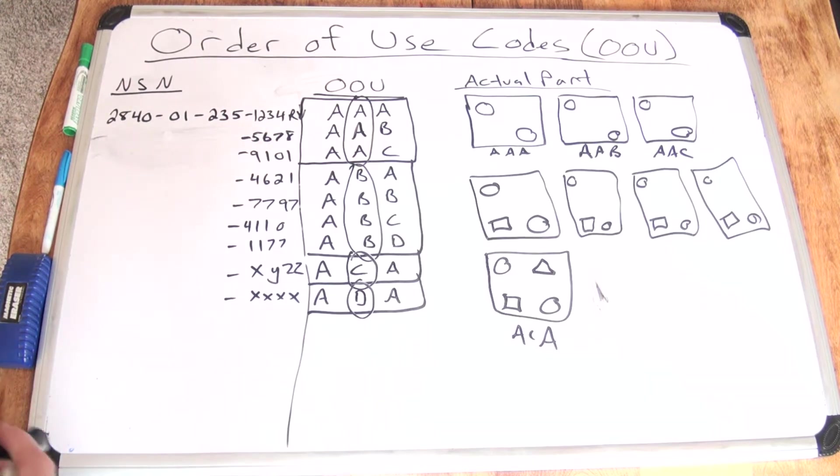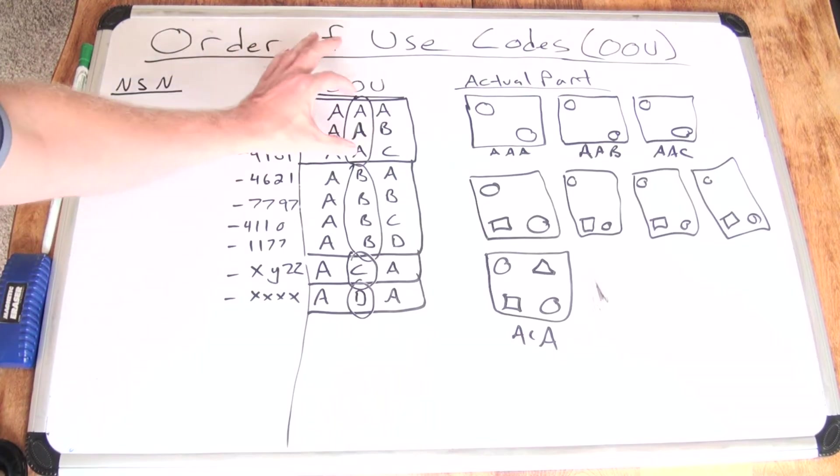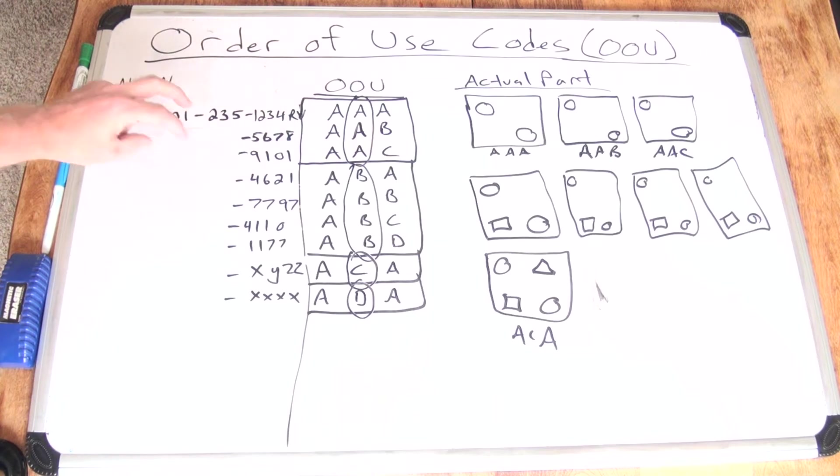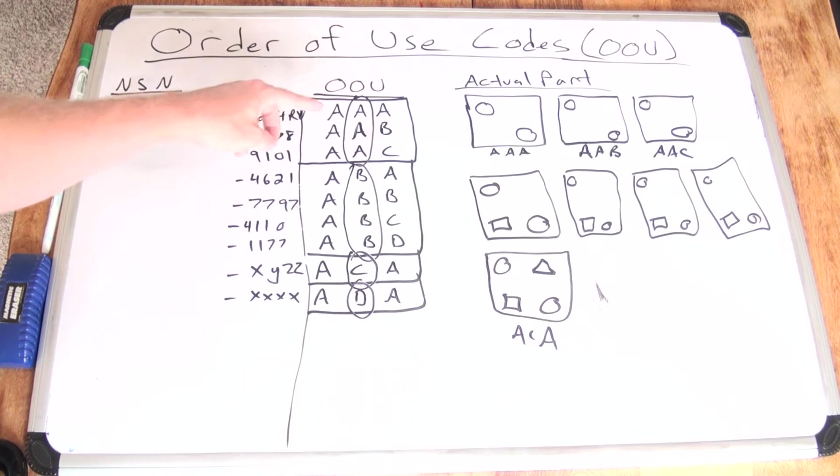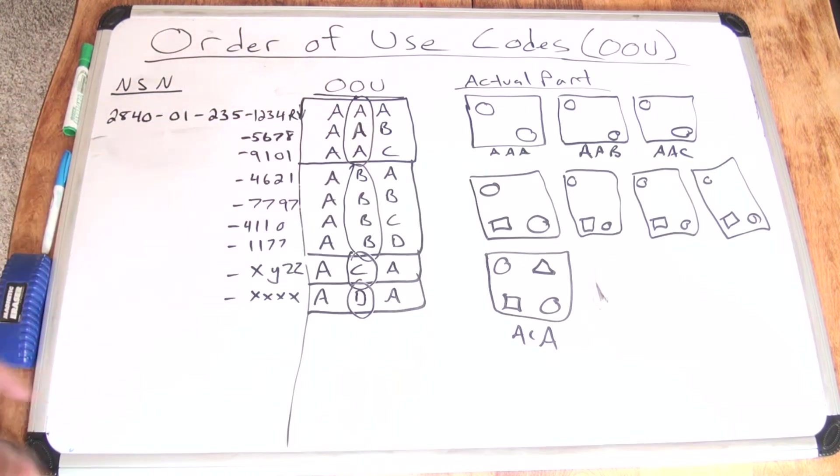So the way the rules work is if you're in the same subgroup, subgroup A, you can interchange any one of these stock numbers and it's not going to matter to the technician on the floor whether or not he gets AAA, AAB, or AAC. It doesn't matter. They're two-way interchangeable it's called.